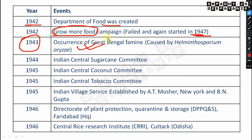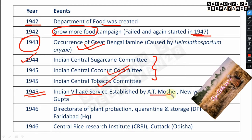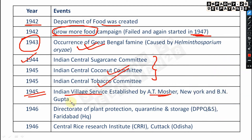The Bengal famine occurred due to Helminthosporium oryzae blast in rice. In 1944, the Indian Central Sugarcane Committee was formed; in 1945, the Indian Central Coconut Committee and the Indian Central Tobacco Committee. These committees — when cotton, sugarcane, coconut, and tobacco committees were formed — are all important to remember.